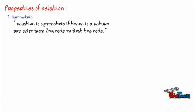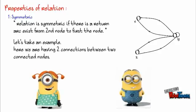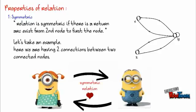Now, properties of relation. First, symmetric. Relation is symmetric if there is a return arc exists from second node to the first node. Let's take an example. Here, arc goes from first node to the second node and again returns to the first node.